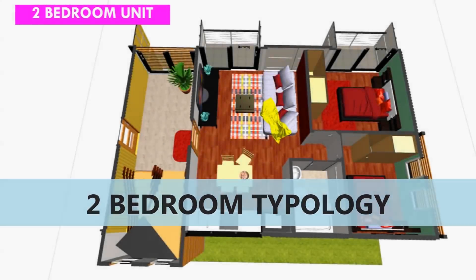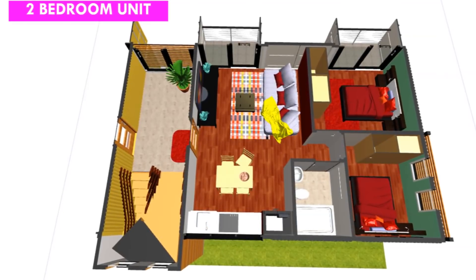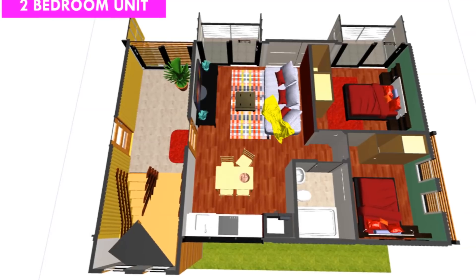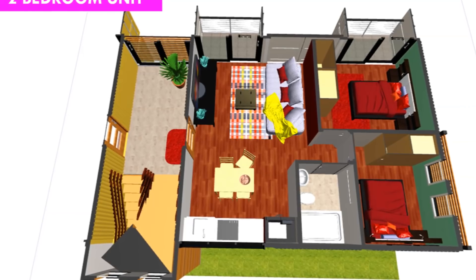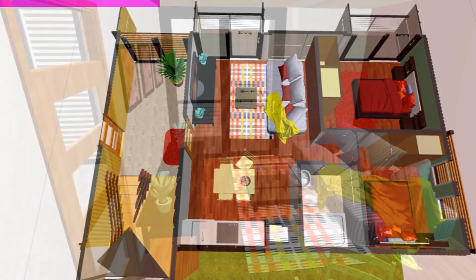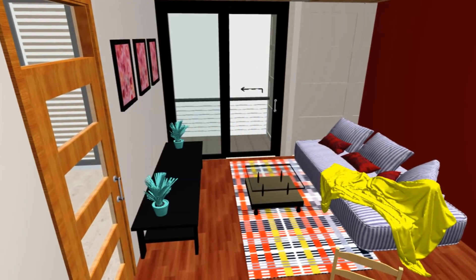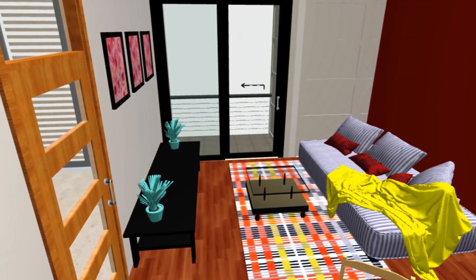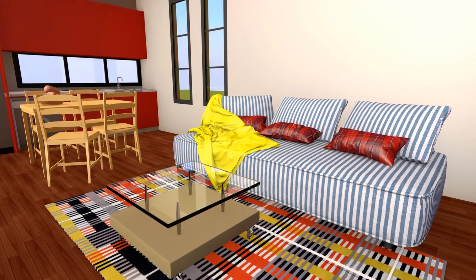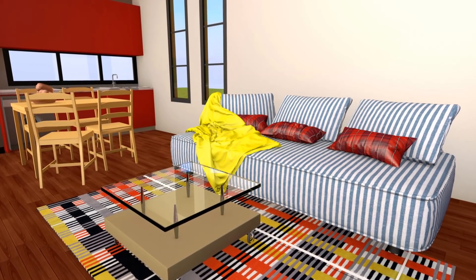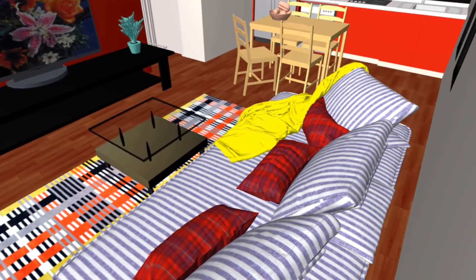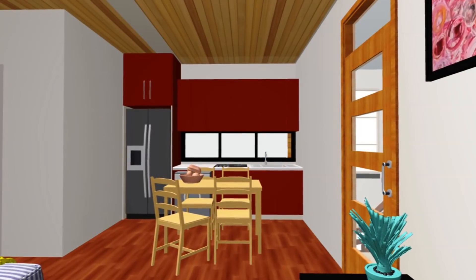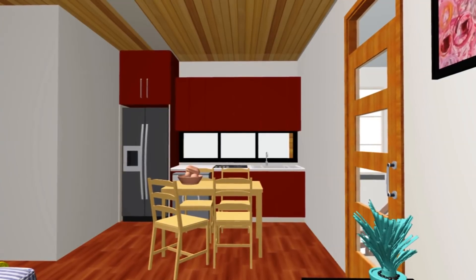The two-bedroom block has three 20-foot containers placed in parallel to each other, forming a compact housing unit of 480 square feet of habitable space. When you enter either of the two-bedroom apartment units, you'll find a small, cozy lounge space which can fit a sofa bed to make the space more functional.